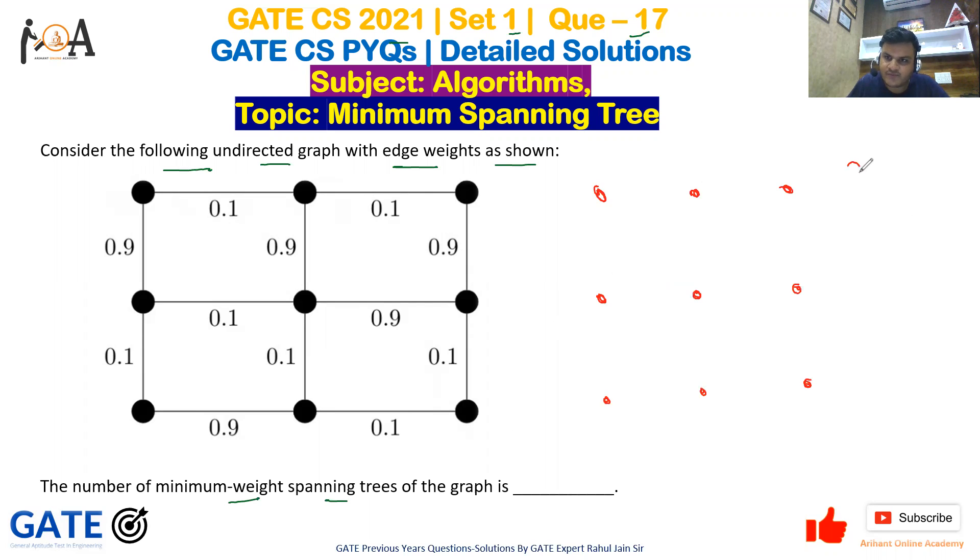So if we have nine nodes, then in the MST the number of edges would be eight. You can understand it like this: if we have n nodes in our graph, then its MST will have n minus 1 number of edges.